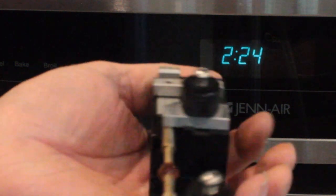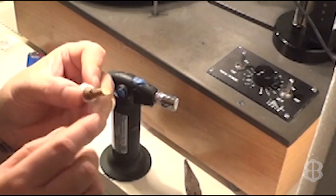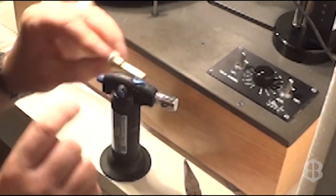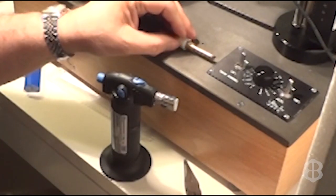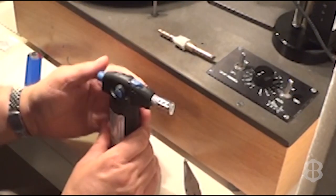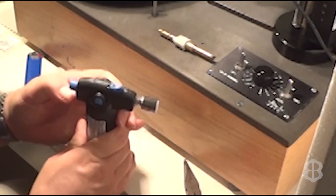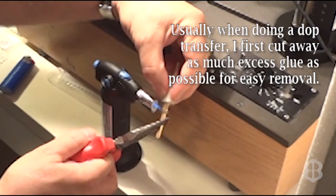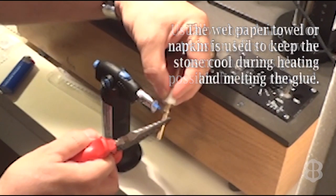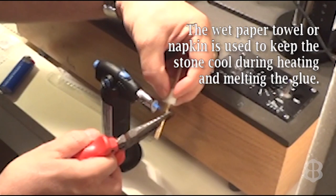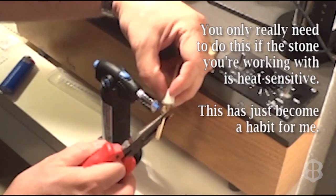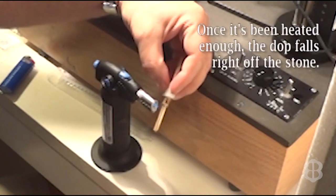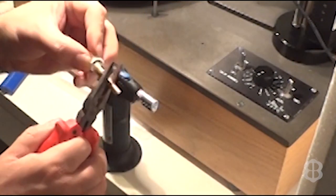To remove the first dop, I wrap the gemstone in a wet piece of paper towel and apply heat to the first dop until the dop falls off. After polishing the second half of the gemstone, if I use super glue, I put the dop and gemstone into a pill bottle with acetone overnight. The next day, the stone is almost always separated from the dop.